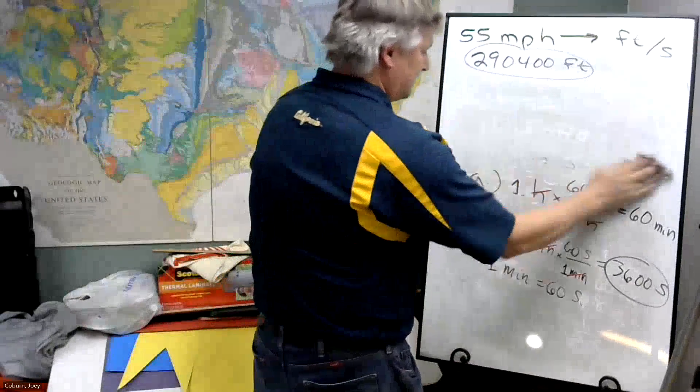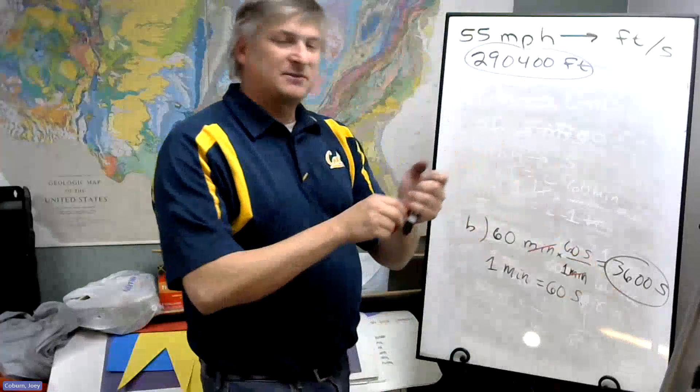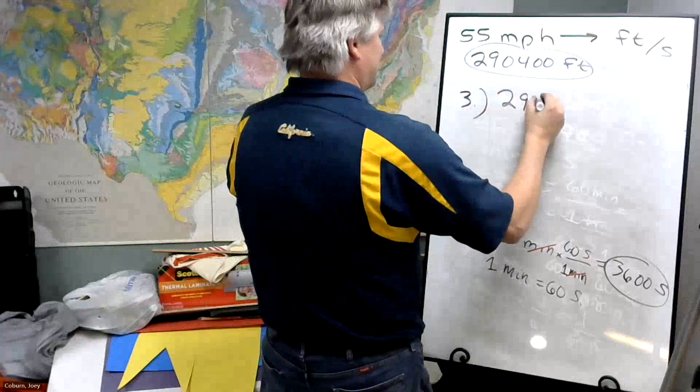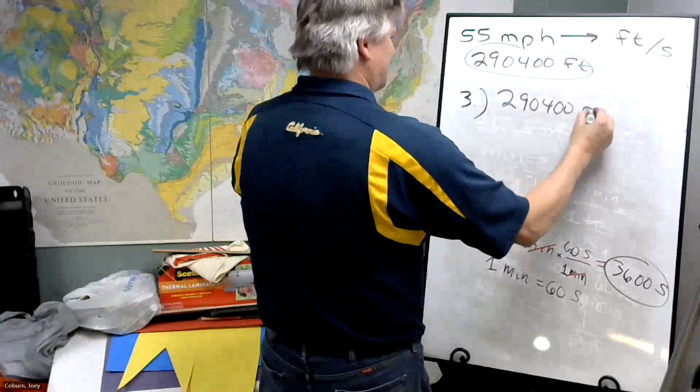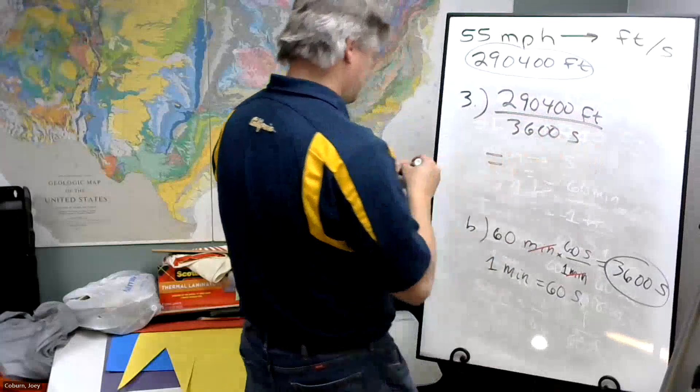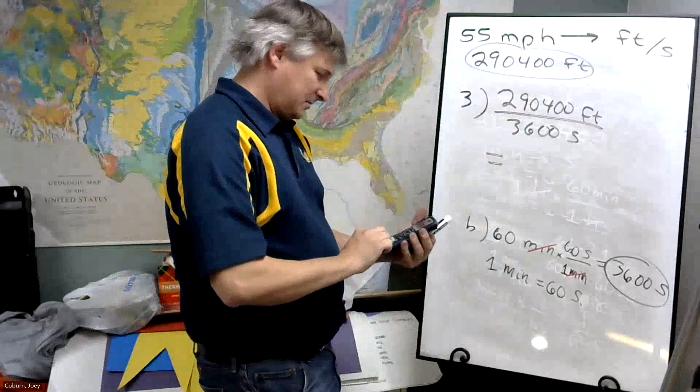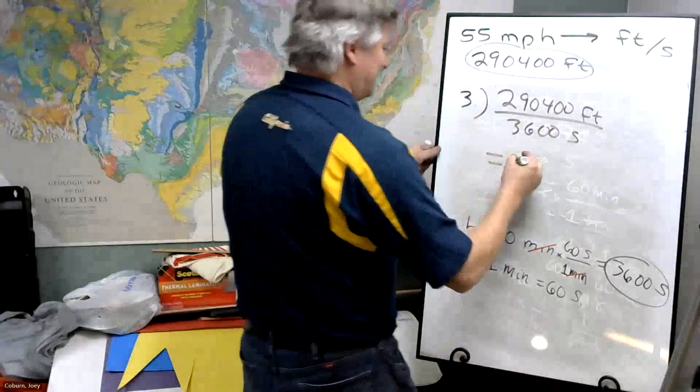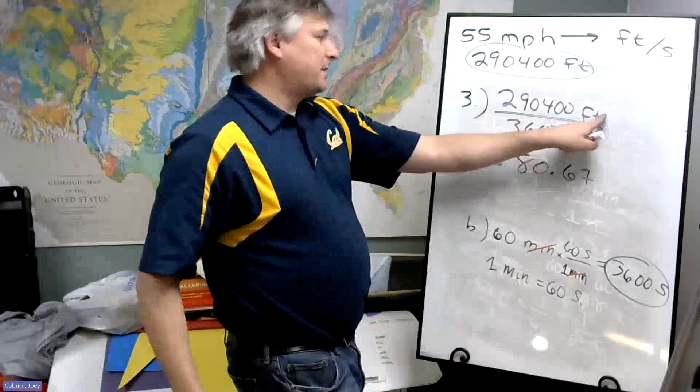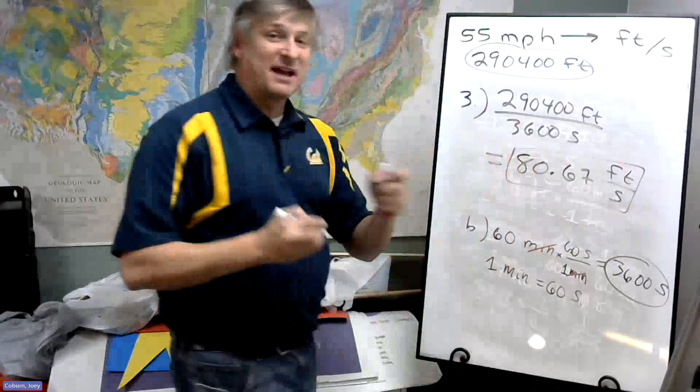Now step three: we take the feet we found in step one, divide by the seconds we found in step two. And we get the same answer: approximately 80.67, and then feet above, seconds below. Feet per second. And that's it.